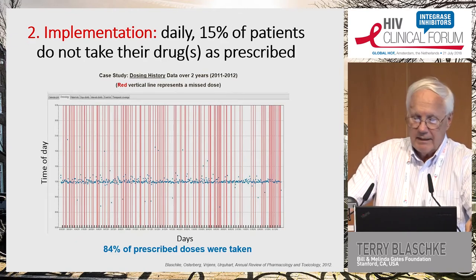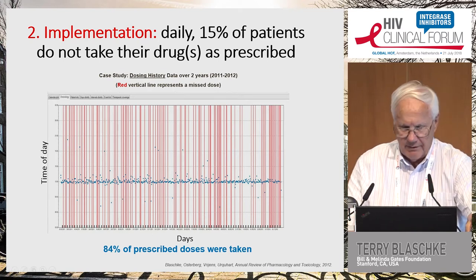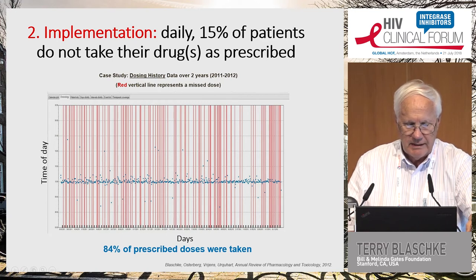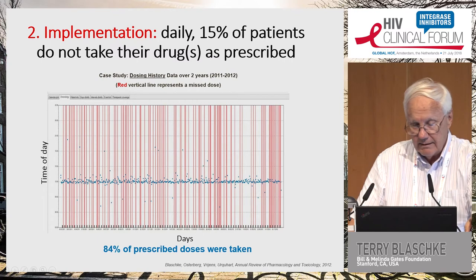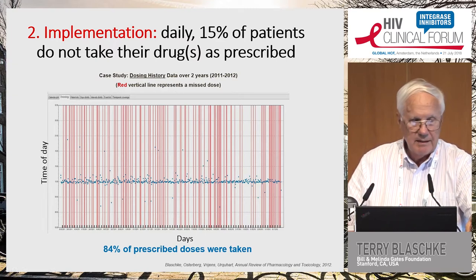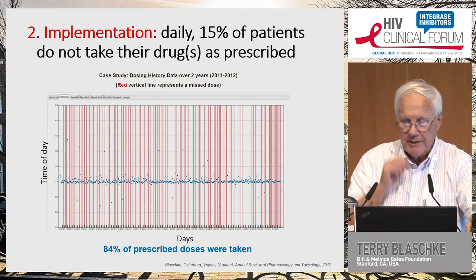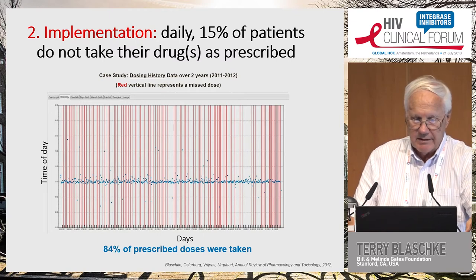Implementation is very important. Daily, 15 percent of patients do not take their drugs as prescribed. Using electronic monitoring, we can see dosing history where vertical red lines represent missed doses. This is a history taken over two years. This particular patient took 84 percent of their prescribed doses, meaning they missed 16 percent. But as I'll show in a moment, they don't miss them necessarily randomly — they actually miss them often in very specific patterns.